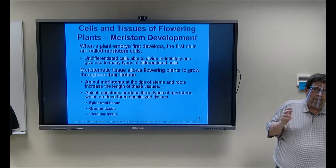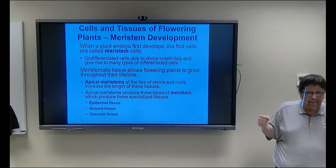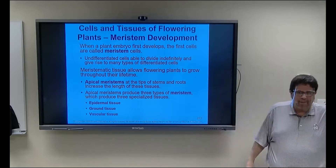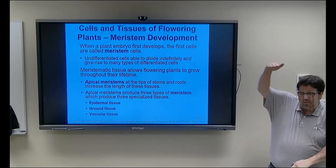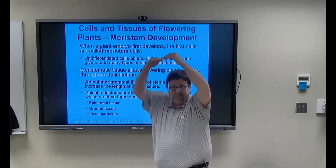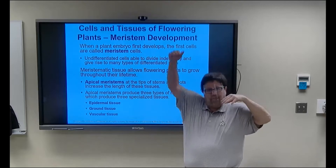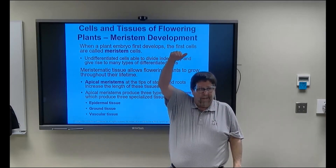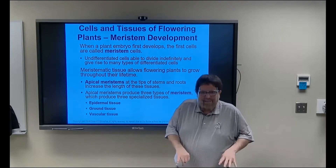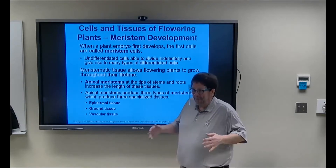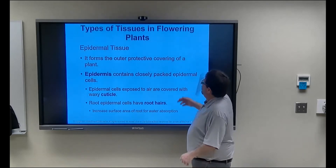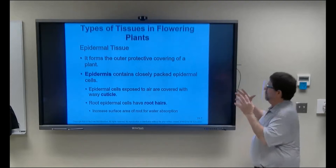If you've ever nailed a fence wire to a tree, in 20 years how high will the wire be? It'll be at the same height — plants don't pick the wire up; they just add to the tip and shoot. The wire grows around in the trunk but does not go up. Here are our three tissues again: epidermal, ground, and vascular. Epidermal is the outside protected covering of the plant — same as our epithelium.